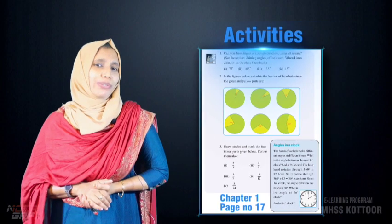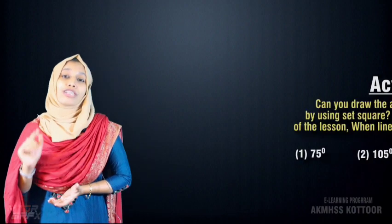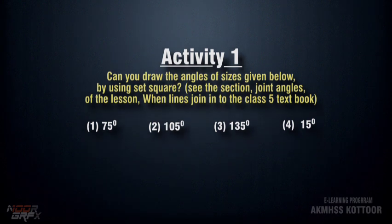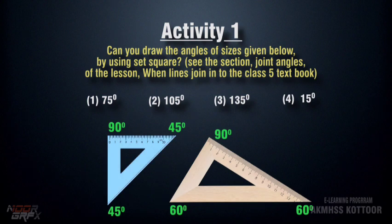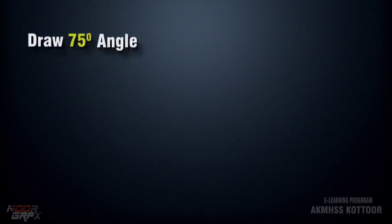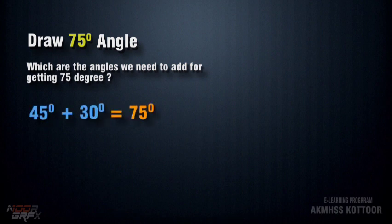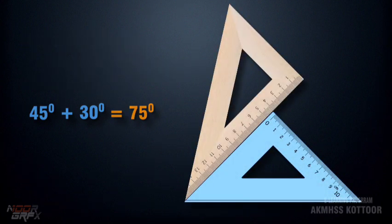Let's go through some activities from your textbook. From the activities, I will show you some examples, and the rest you can do as homework. Can you draw angles of sizes given below using a set square? We know the angles of the set square. We want to draw these angles only by using a set square. Start with 75 degrees — 45 and 30 equals 75. We place the two set squares like this.